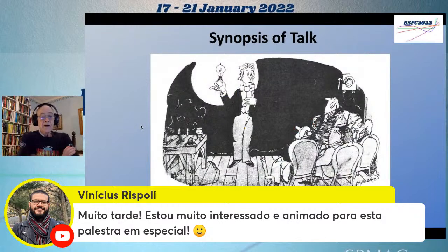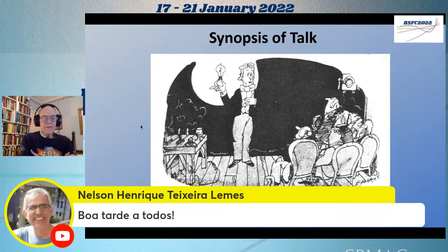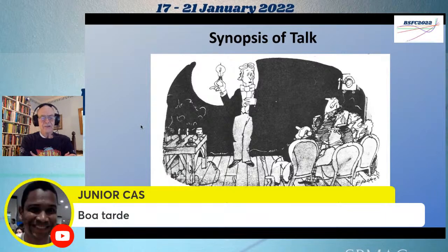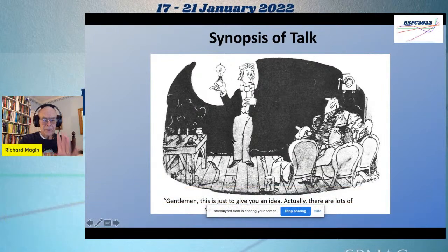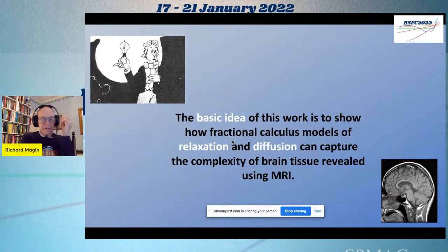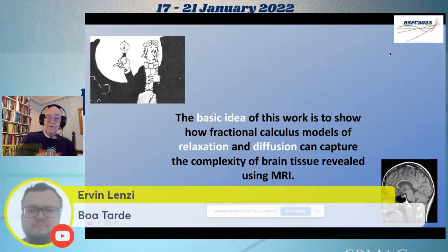A summary or synopsis of the talk — this is a cartoon I got from a British magazine. This is just to give you an idea; there are actually lots of wires and things. What I'll be talking about is largely an overview: how fractional calculus models, particularly of diffusion and relaxation, can be used to capture the complexity of brain tissue as it's revealed in MRI.